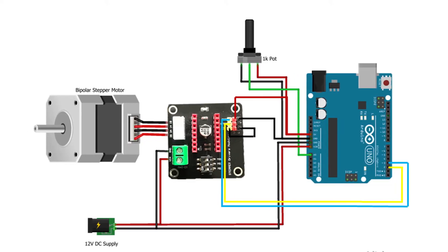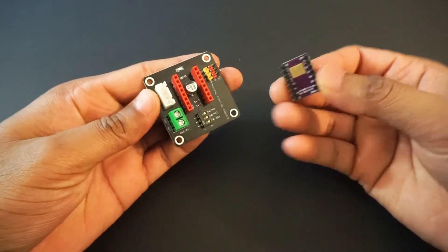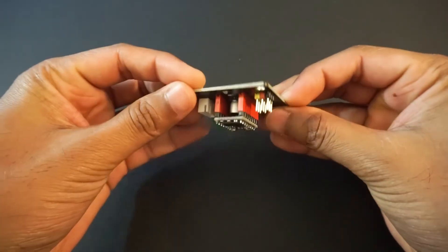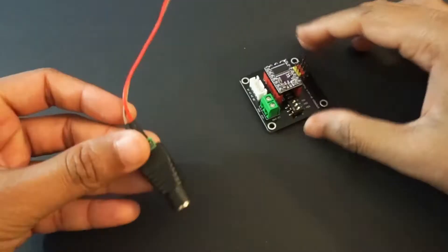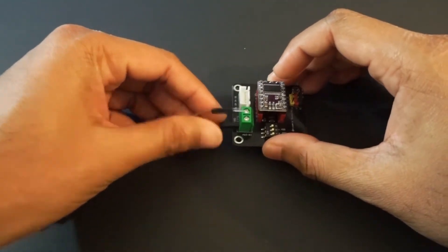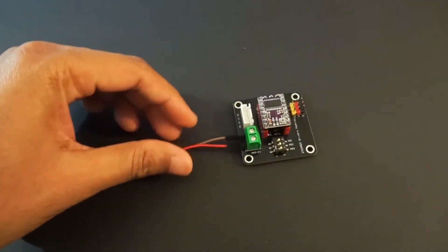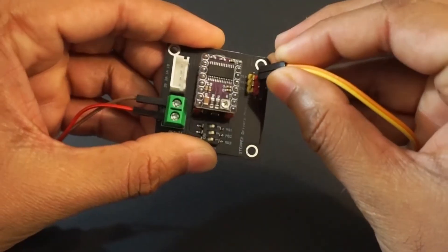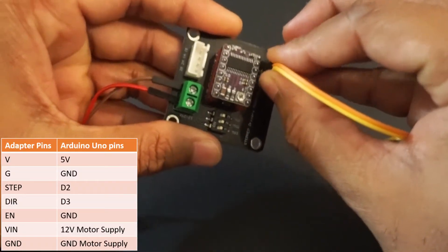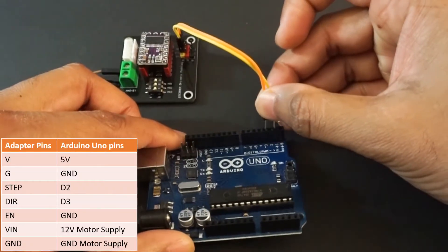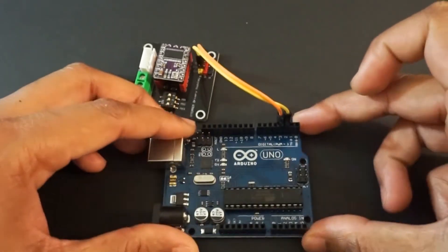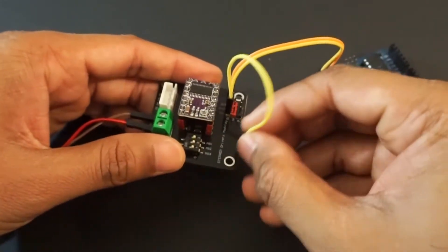Now let's make a connection as per circuit diagram. Connect DRV8825 driver to adapter. Attach power supply connector. Connect step and direction pins from adapter to Arduino. Also connect enable pin on adapter to ground pin.